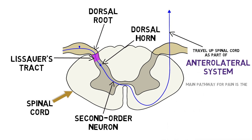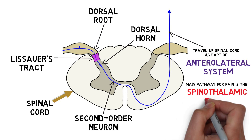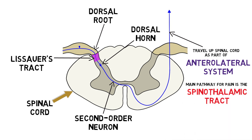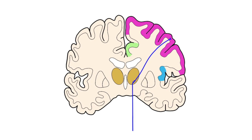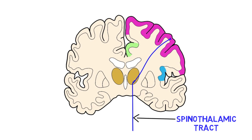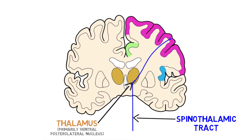The main pathway for pain in the anterolateral system is called the spinothalamic tract. The spinothalamic tract is involved in the awareness of painful stimuli and the recognition of where in the body the painful stimulus is occurring. Spinothalamic tract fibers travel up from the spinal cord to the ventral posterolateral nucleus and other nuclei of the thalamus.